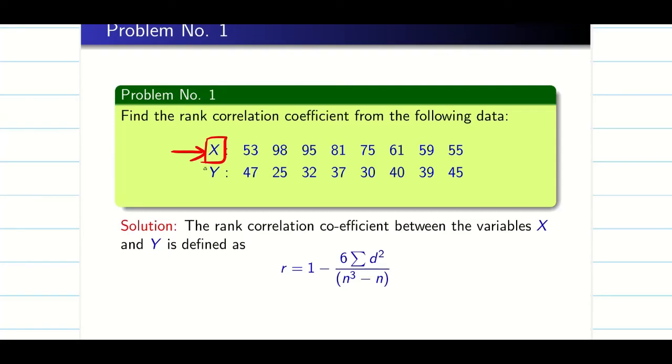So my n is going to be 8 here. di is the difference from two ranks xi and yi.